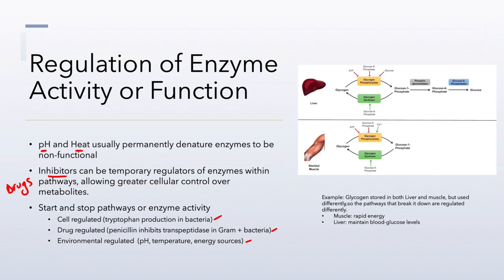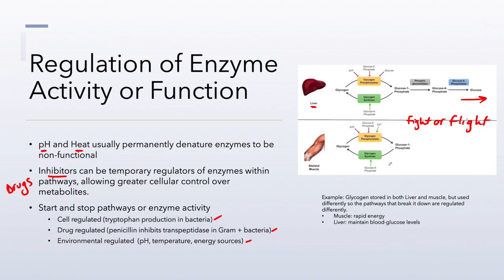Here's an example using glycogen. We store glycogen in liver and muscle cells, but they use it differently. The liver takes glycogen and breaks it down into glucose molecules to send out into the bloodstream for other cells to use. Whereas in muscle cells, glycogen is broken down for a quick and rapid energy supply — the glucose is used in the actual muscle cell itself. Both reactions use glycogen in a fight-or-flight sympathetic nervous system response, but how they use it is different because there are different enzymes in these pathways.